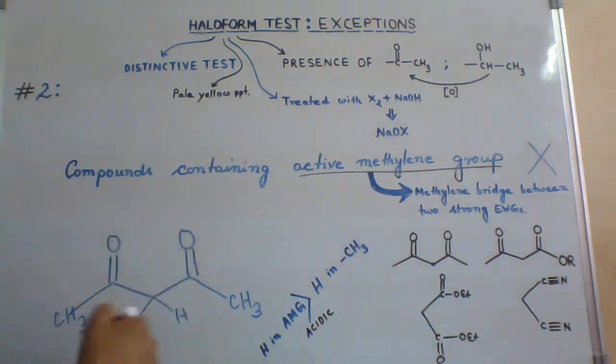Consider this example. Here we have methylene group and it is present between two strong electron withdrawing ketonic groups. This is an example of active methylene compound.